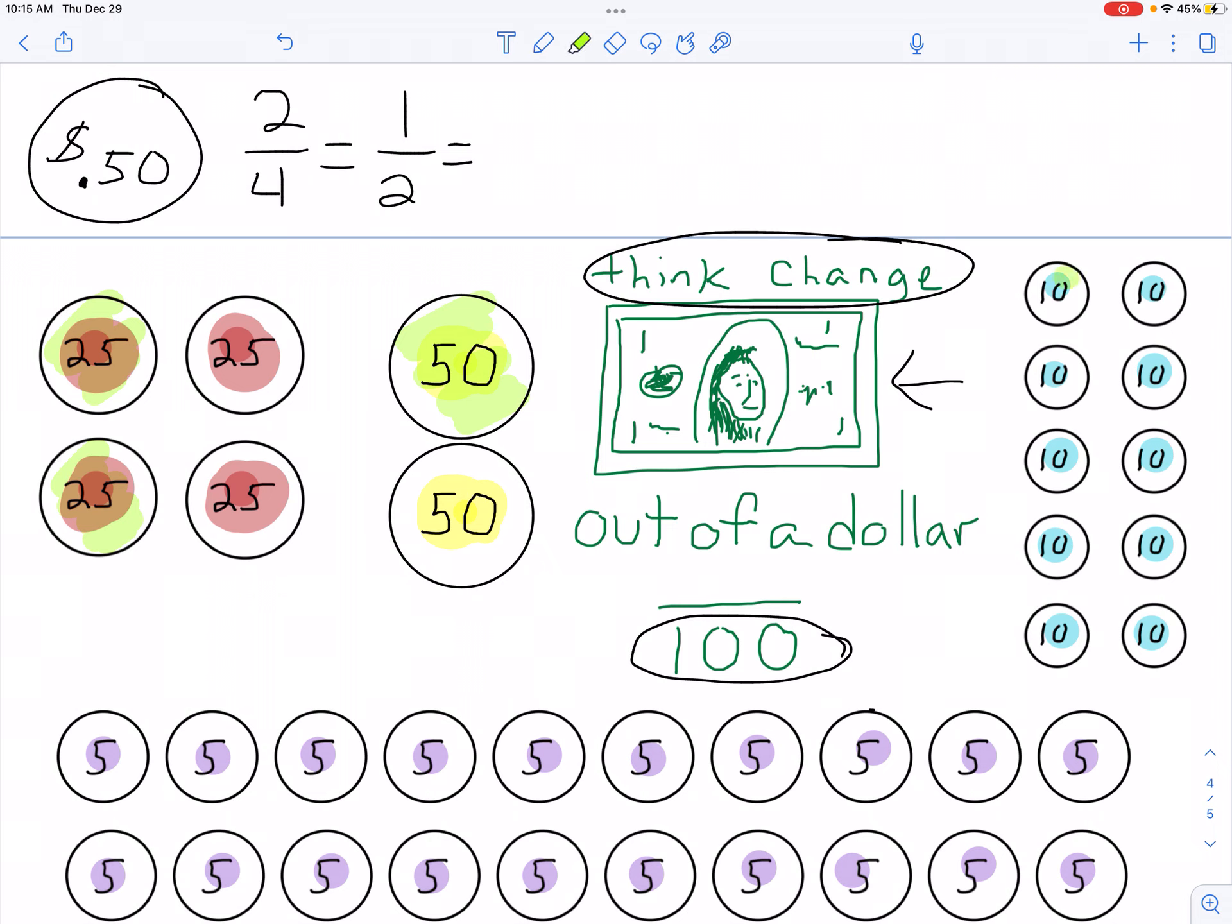If we're talking dimes, one, two, three, four, five dimes make up 50 cents. And there are 10 dimes that make up a dollar.